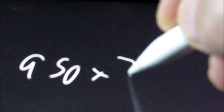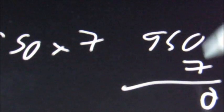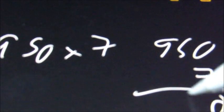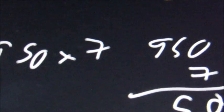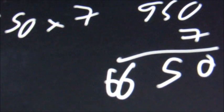If we have something a little bit bigger, 950 times 7. Again, do it vertically. 950 times 7. 7 times 0 is 0. 7 times 5 is 35. 7 times 9 is 63, plus 3 is 66. So the answer is 6,650.